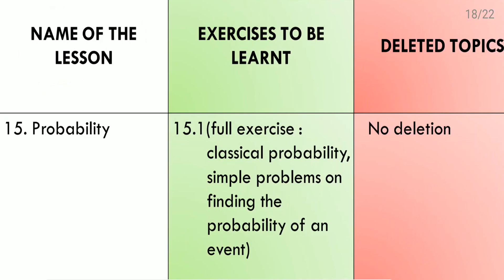Lesson 15: Probability. There is only one exercise. We need to do the full exercise — all the sums. It covers classical probability and simple problems on finding the probability of an event. No portion is deleted from this lesson.